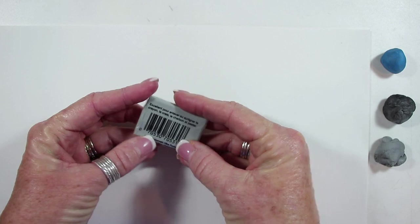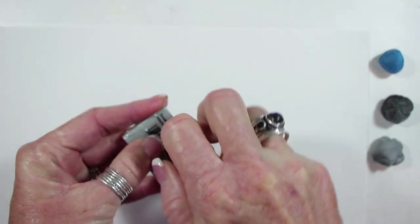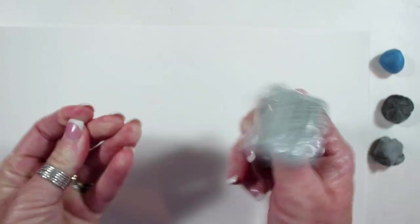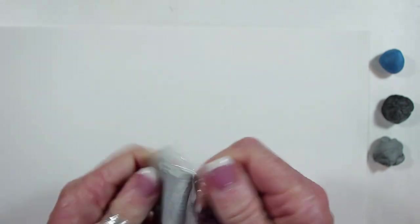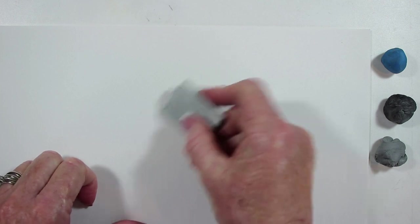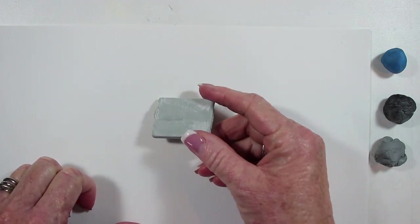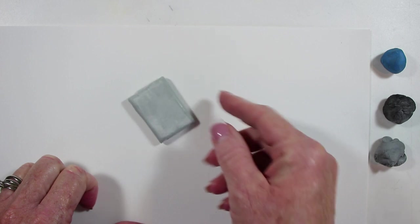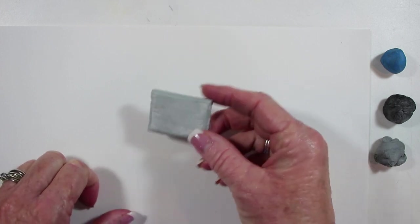When you get a package like this, it comes in cellophane, and you're going to open it up. One of the mistakes that I see people do quite often is that they just open it up and start using it like this, as if it were a regular plastic eraser or a pink eraser. They don't do anything with it, and they can't figure out why it doesn't work.